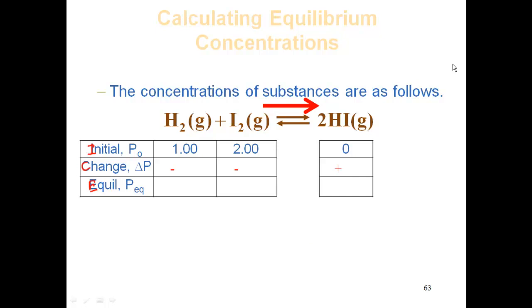That means I have negative changes on my reactant side and positive changes on my product side. I need some relationship between these species. So I'll go with the mole coefficients, which means we'll have X H2 consumed, X I2, and 2X of HI formed.